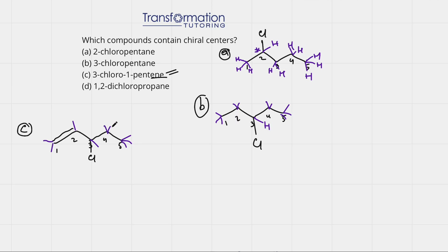This carbon has two hydrogens — can't be a chiral center. This one has three hydrogens — can't be it. So we're looking at the carbon with the chlorine group. This carbon has one hydrogen, a chlorine, on the left it has two carbons and on the right it has two carbons as well. But on the left there is a double bond, which makes that group different. So this carbon has four different groups: chlorine, hydrogen, carbon-double-bond-carbon on the left, and carbon-single-bond-carbon on the right. Therefore this is a chiral center.